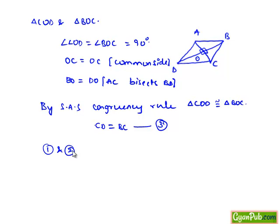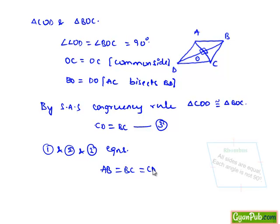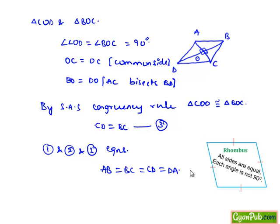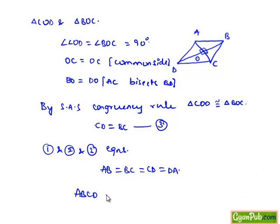From equations one, two, and three, every side is equal to CD, so we can say AB = BC = CD = DA. Since the diagonals bisect each other perpendicularly and all sides are equal, we can finally conclude that ABCD is a rhombus, which is what we were required to prove.